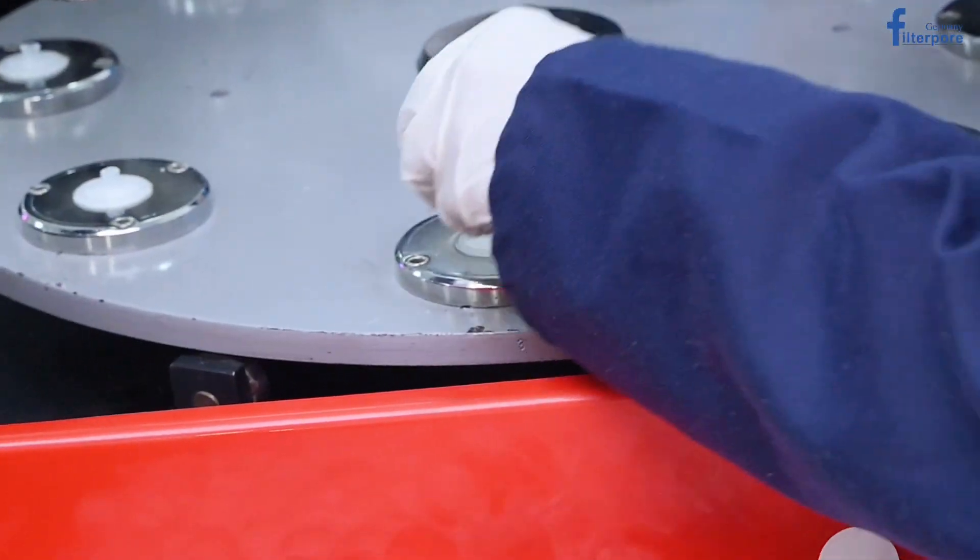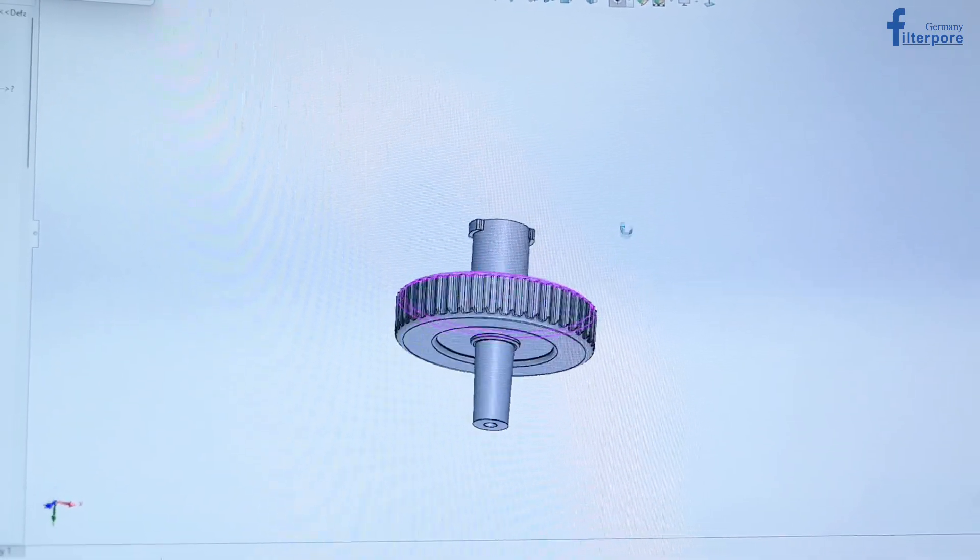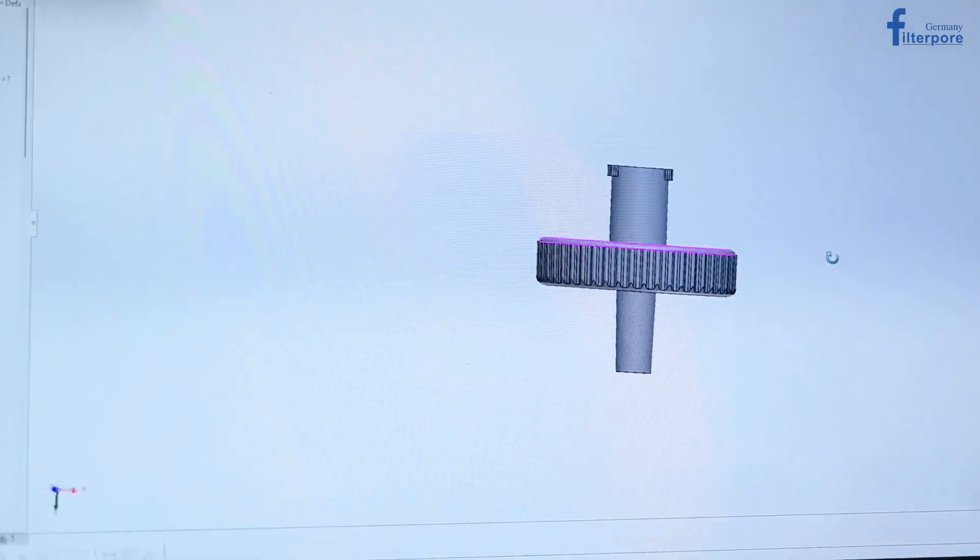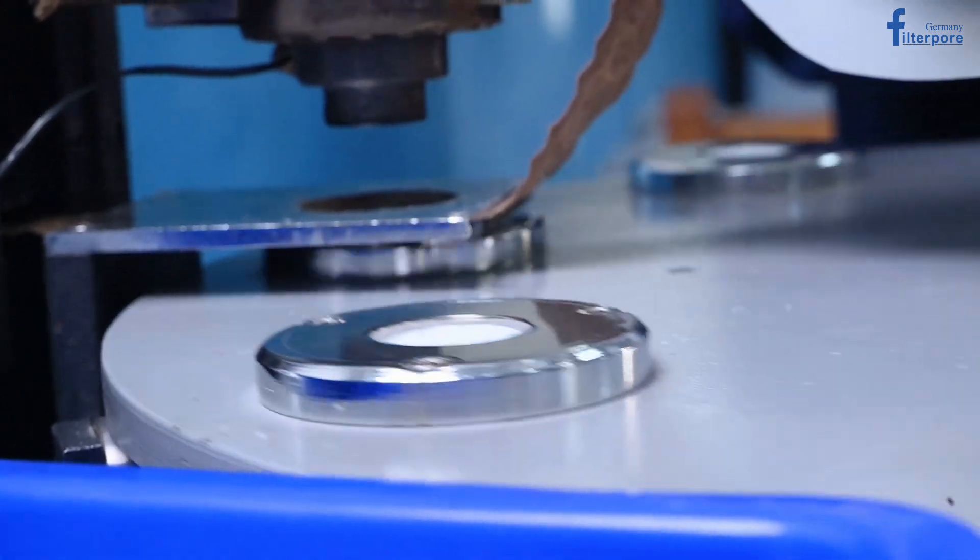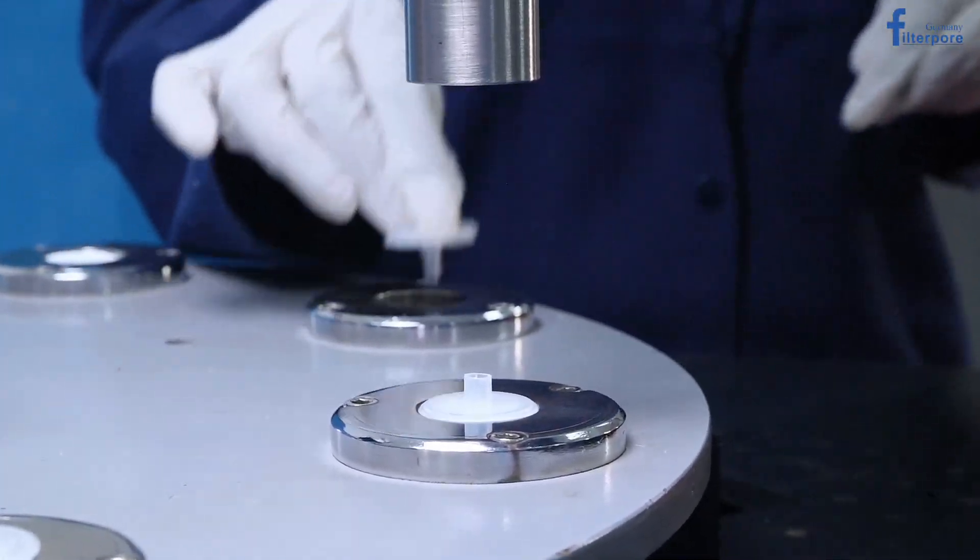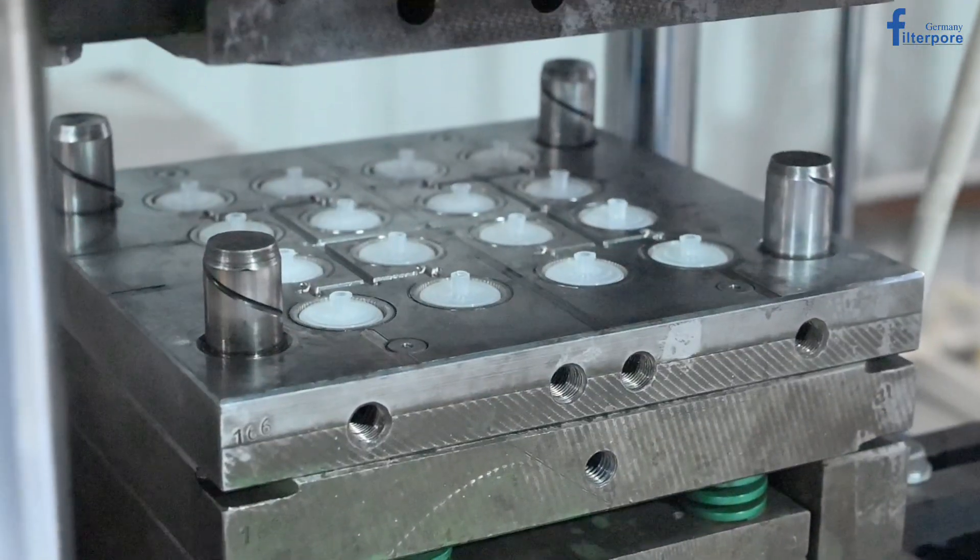With pore sizes like 0.2 microns and 0.45 microns, FilterPour Germany syringe filters ensure the removal of bacteria, particulates and impurities.